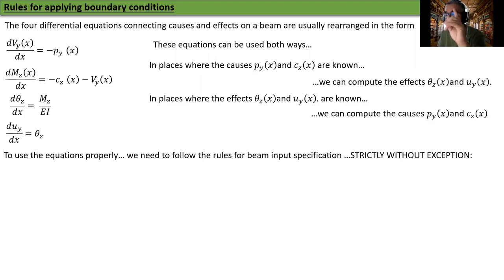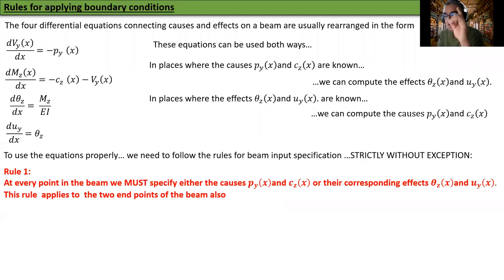To use these equations properly, we need to follow the rules for beam input specification, and this is strict without exception. Rule number one. At every point in the beam, we must specify either the causes PY and CZ or their corresponding effects theta z and UY. This rule applies to the two endpoints of the beam also.